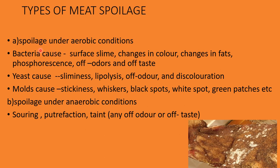Under aerobic conditions, bacteria cause surface slime, changes in color of meat pigments, changes in fats, phosphorescence (a glowing nature), off-odor, and off-taste. Yeast causes sliminess, lipolysis, off-odor, off-taste, and discoloration — white, green, pink, or brown — due to the pigments in the yeast.